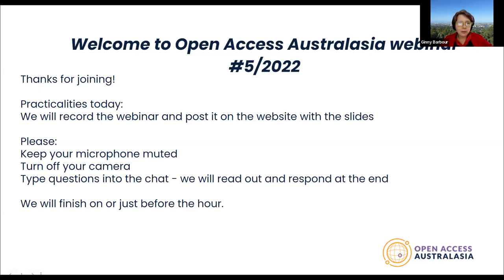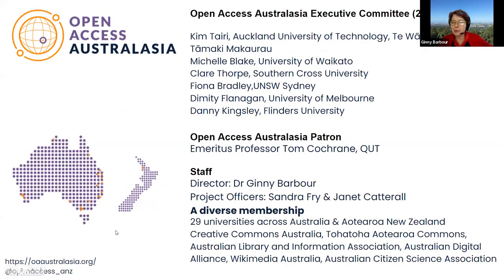For those of you that don't know Open Access Australasia, we are a member organisation of 29 universities as of yesterday — we had one new member join — across Australia and Aotearoa New Zealand. Our chair of the executive committee is Kim Terry from AUT. I'm the director and Sandra and Janet Cattrall are our project officers. We also have six affiliate organisations which include Creative Commons Australia, Tohatoha Aotearoa New Zealand, the Australian Library and Information Association, Australian Digital Alliance, Wikimedia Australia and the Australian Citizen Science Association. We're very much interested in the diversity of Open Access and equity across this space.